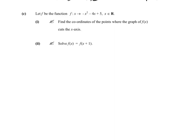Now let's look at the second question, which is probably slightly more interesting. You have to solve f(x) equals f(x+1). When you see the word solve, that means you have to find what x is. It looks confusing because you've got f(x) and you don't really know what to do. We've got to change this somehow. Well, the first thing you should know is that f(x) is equal to all of this expression. So you could replace f(x) with minus x squared minus 4x plus 5 on the left-hand side.